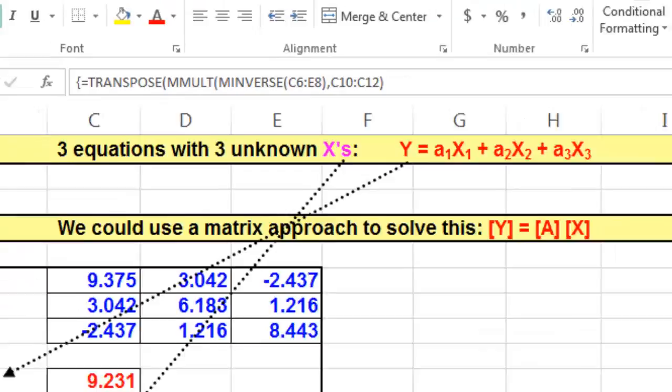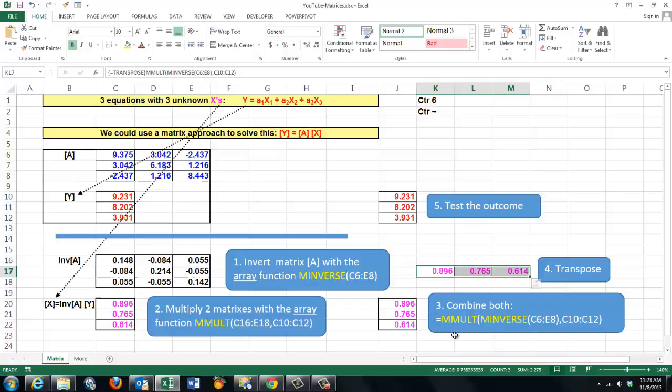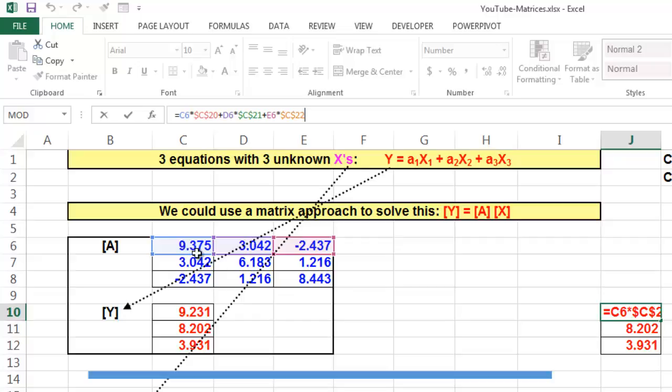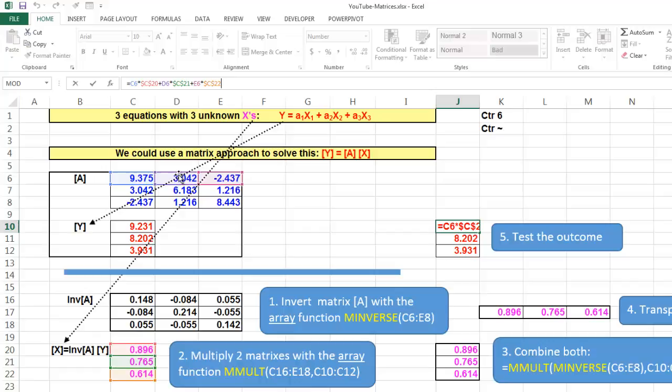To make sure that my operations were correct and gave me the correct results, I am testing the outcome by multiplying with what I found. So I actually did in the first cell here, I did this cell times that one, the second one times this one, the third one times that one. And I found in there exactly what was to be expected: 9.231.